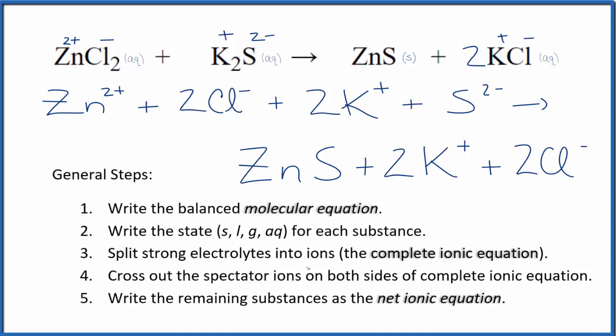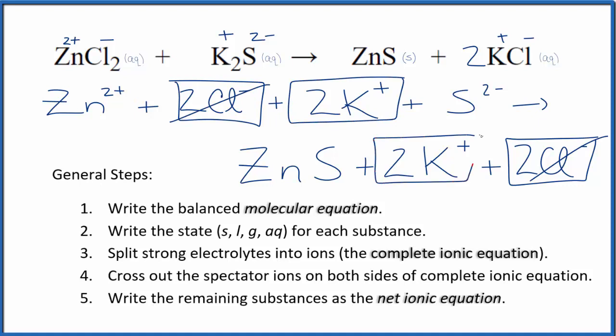Now we can cross out spectator ions. They're on both sides. So as I look at the reactants here and then the products, I can see I have two chloride ions in the reactants. I also have that in the products. I'm going to cross that out. I have two potassium ions in the reactants and two in the products, spectator ions. Cross them out. What's left, that's the net ionic equation for ZnCl2 plus K2S.